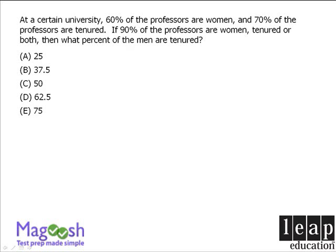To begin, we need to recognize that every professor at this university has two criteria associated with him or her. The first criteria is being male or female, and the second criteria is being tenured or untenured.